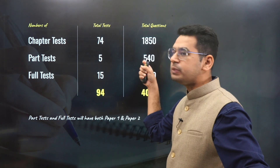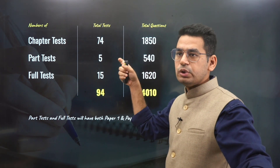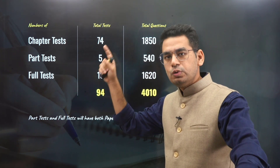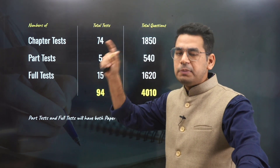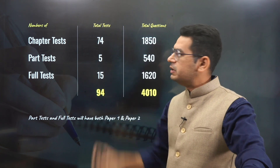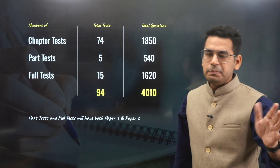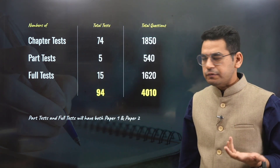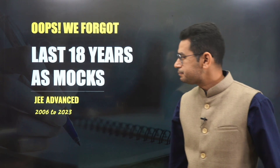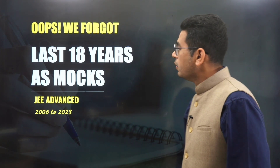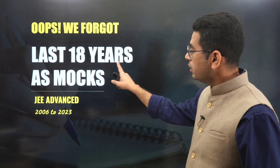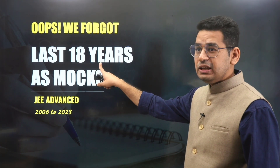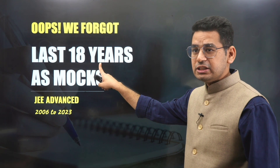Since there's Paper 1 and Paper 2, the count doubles. For chapter tests, there is only one paper and it will be of 1 hour to 1 hour 15 minutes. Also, we forgot to mention: there will be the last 18 years' papers available as mocks.